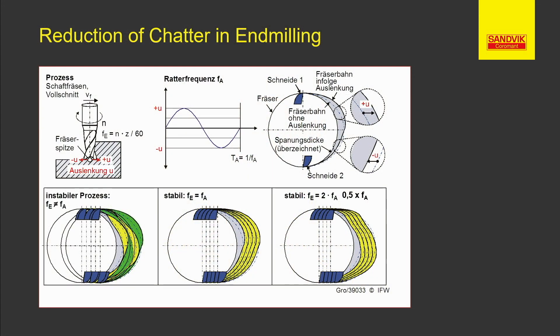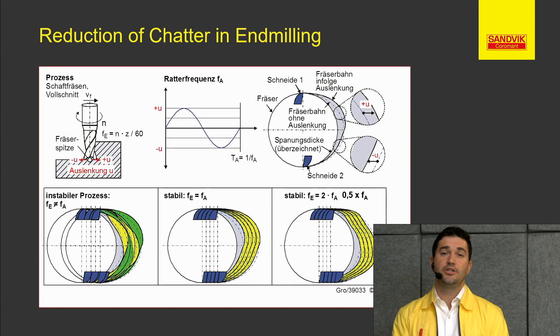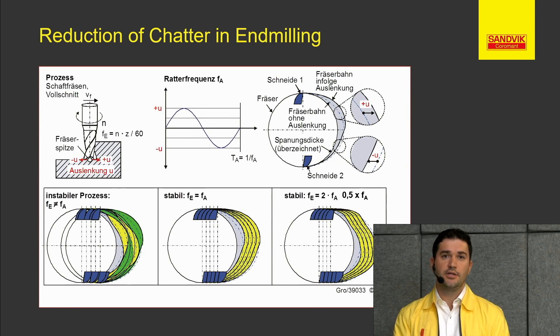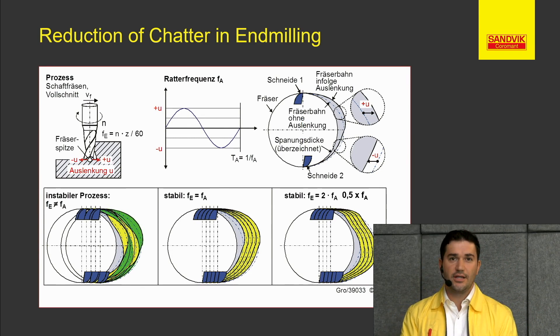For this, we first need to have a look at the theory more intensively. One thing we haven't talked about in milling is vibration. The milling application, by design, has an interrupted cut. That means every time your tool engages in the cut and exits, it means one vibration or one hertz. One easy way to calculate that is: RPM times number of flutes divided by 60. You can easily see how many hertz you get. We call this the tool passing frequency.